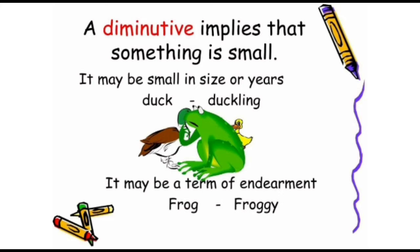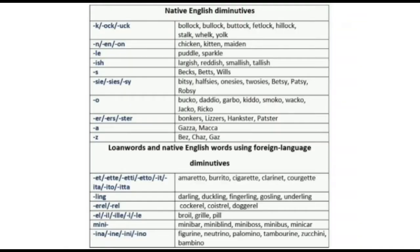Diminutives imply that something is small — it may be small in size, for example duck becomes duckling. It may also be a term of endearment, for example frog becomes froggy. As you can see, diminutives appear in a vast number of examples.